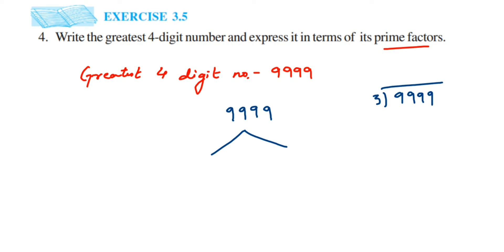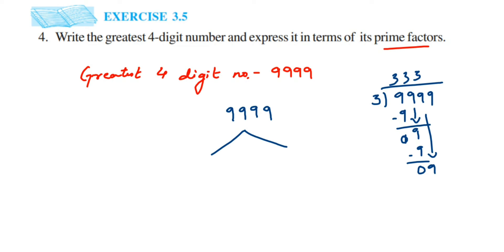Three times three is nine, remainder zero. Drop the next nine — three times three is nine again, remainder zero. Drop the next nine — three times three is nine again, remainder zero. Drop the last nine — three times three is nine, subtract, and we get zero. So 9999 divided by 3 gives us 3333.